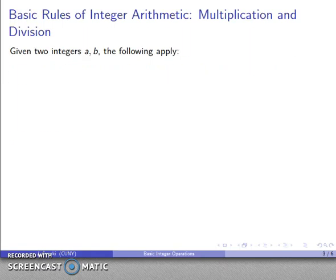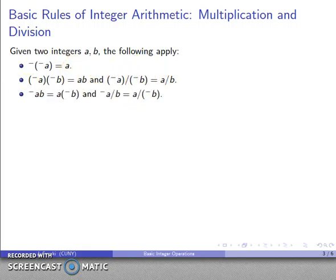Let's do a quick review. Given two integers a and b, the following rules apply: The negative of negative a is a itself. For the product of two signed numbers, if I have two negatives, the sign drops. For the quotient, likewise, if I have two negatives the sign drops. If I only have one negative, it can attach to either factor. Likewise for the quotient, that negative can attach to either the dividend or the divisor.